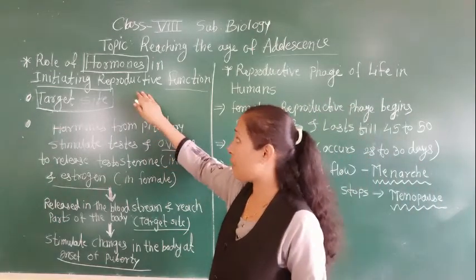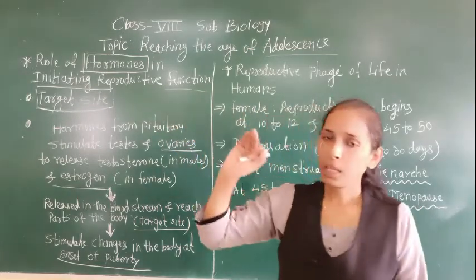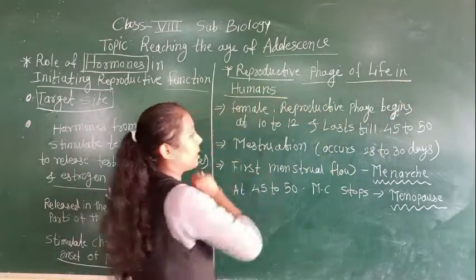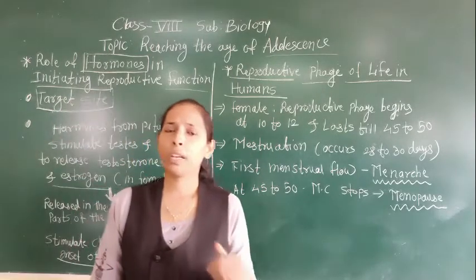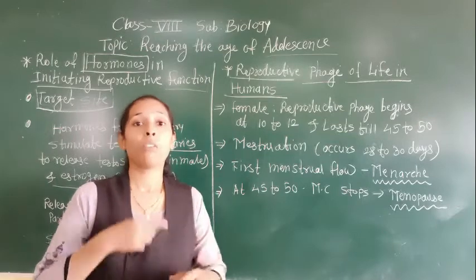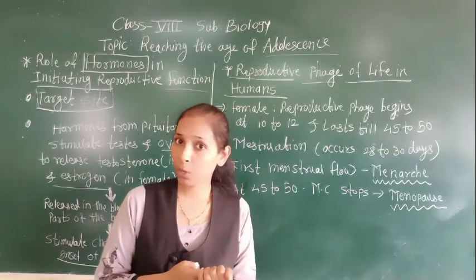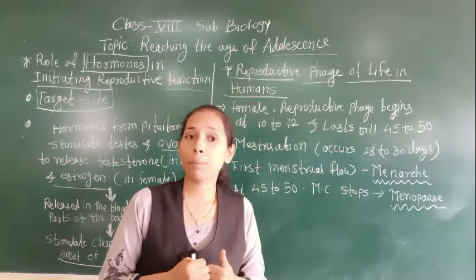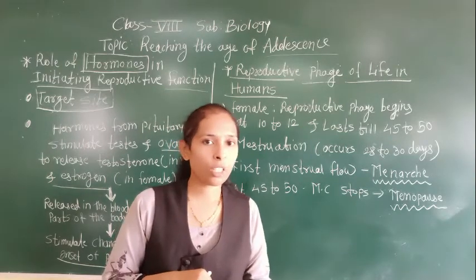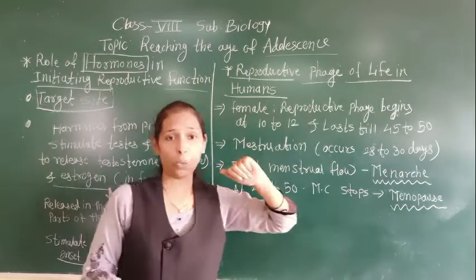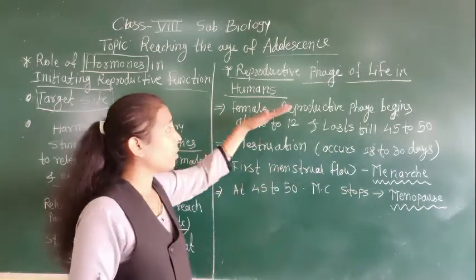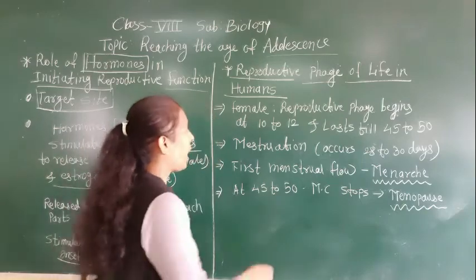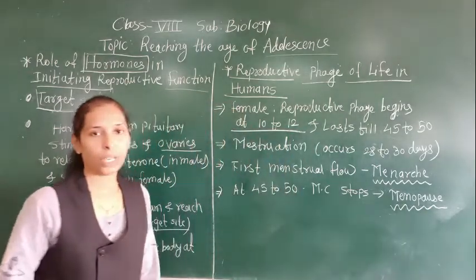So this is about the role of hormones in initiating reproductive functions. Now we will move to the next point: the reproductive phase of life in humans. From the age of adolescence, certain changes start to occur and our bodies slowly get mature for reproduction. Generally in the female, the reproductive phase begins at puberty, around the age of 10 to 12 years.